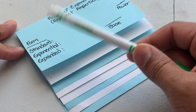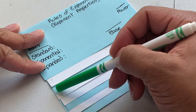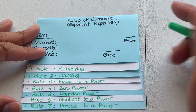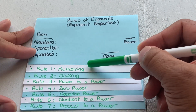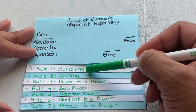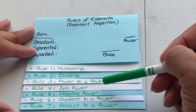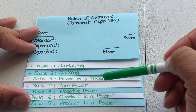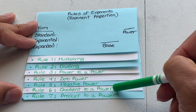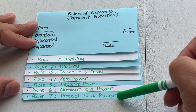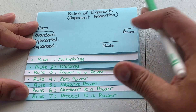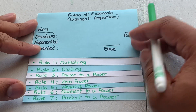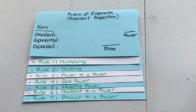Grab another color marker and we're going to write out the rules. Write out the tabs: rule one — multiplying, rule two — dividing, rule three — power to a power, rule four — zero power, rule five — negative power, rule six — quotient to a power, and rule seven — product to a power. These are all the rules we will go over in this video. Pause the video now and copy these down.